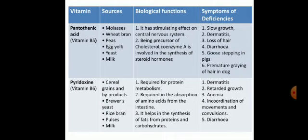Vitamin B5, also called pantothenic acid, is found in molasses, wheat bran, peas, egg yolk, yeast, and milk. It has a stimulatory effect on the central nervous system, and its biological function as a precursor of coenzyme A is involved in the synthesis of steroid hormones. Deficiency symptoms include slow growth, dermatitis (inflammation of skin), loss of hair, and diarrhea.